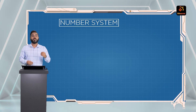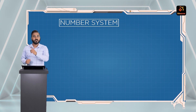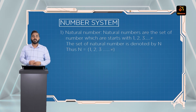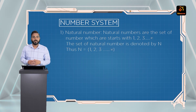In number system, the first part is natural numbers. So students, what are natural numbers? Natural numbers are the set of numbers which we start with 1. So when we say 1, 2, 3, 4 up to infinity, this type of numbers are called natural numbers. We denote natural numbers with N.